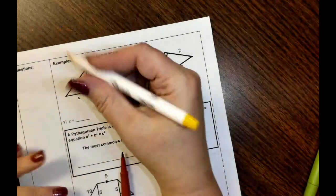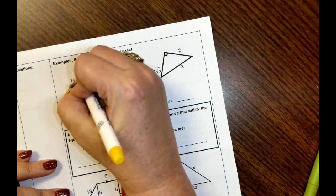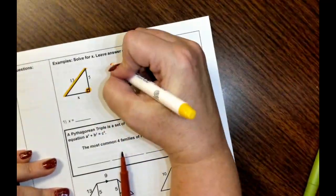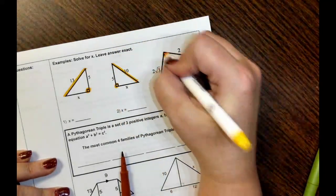So in this case, here's my right angle and here's my hypotenuse. Here's my right angle, here's my hypotenuse. Right angle, hypotenuse.